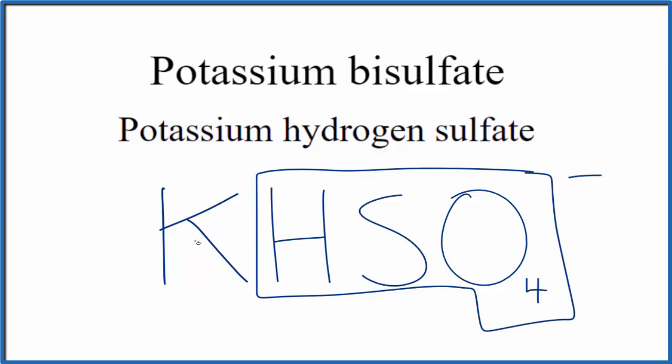Since potassium is a metal, and this polyatomic ion here is a group of nonmetals, this is an ionic compound. So we need to make sure the charge is balanced, that we have a net charge of zero. Potassium, that's in group 1 on the periodic table, that's 1 plus. So the 1 plus and the 1 minus, they give us a net charge of zero.